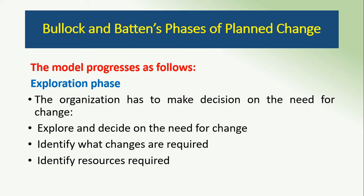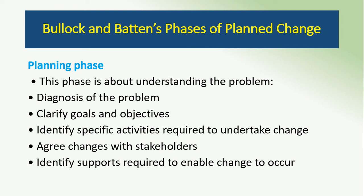For example, an organization wants to adopt a technological change — wants to improve its technology or its production operations. For adopting a technological change, the organization needs to have resources; without resources it is difficult to adopt a change. Coming to the planning phase: after changes are identified and all members of the organization have agreed that the change should be implemented, a plan must be made — how to bring the change, when to bring the change, who will bring the change, what will be the objectives and goals of those changes.